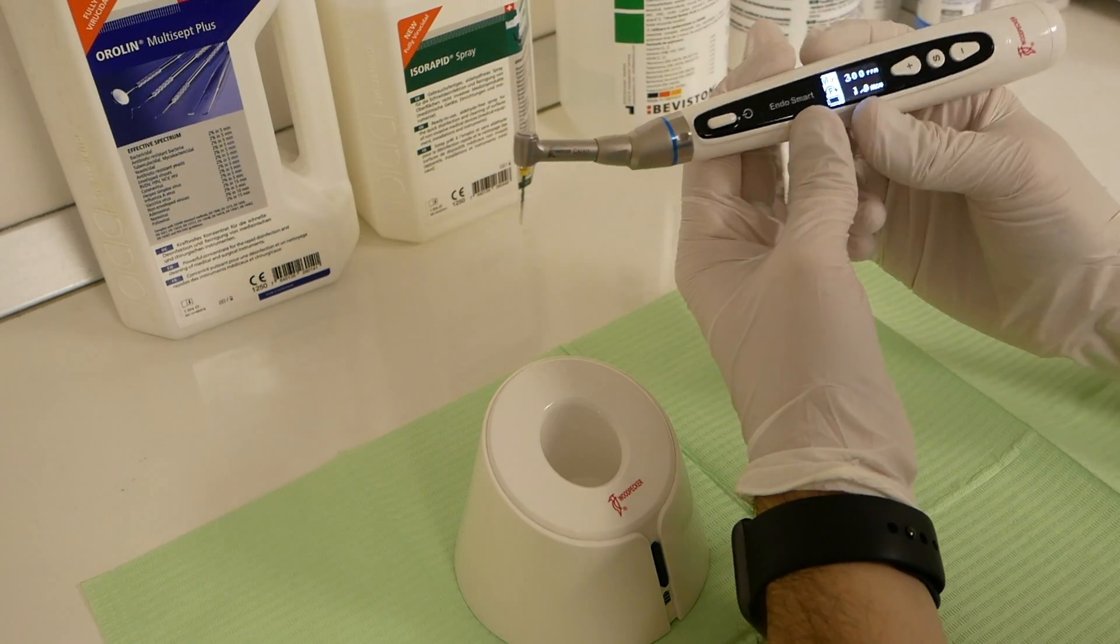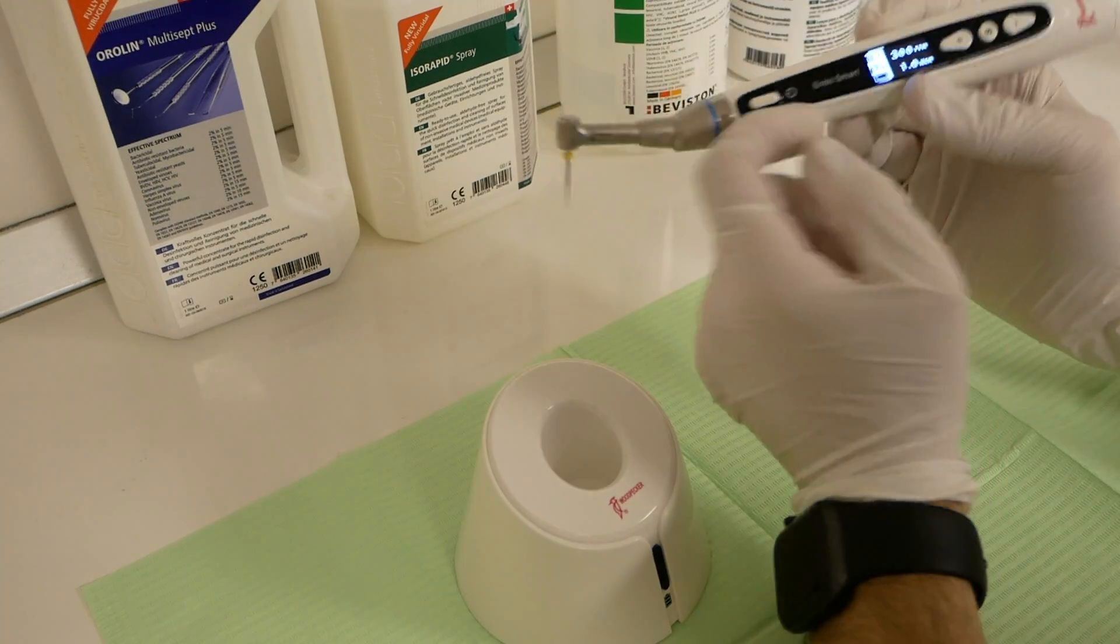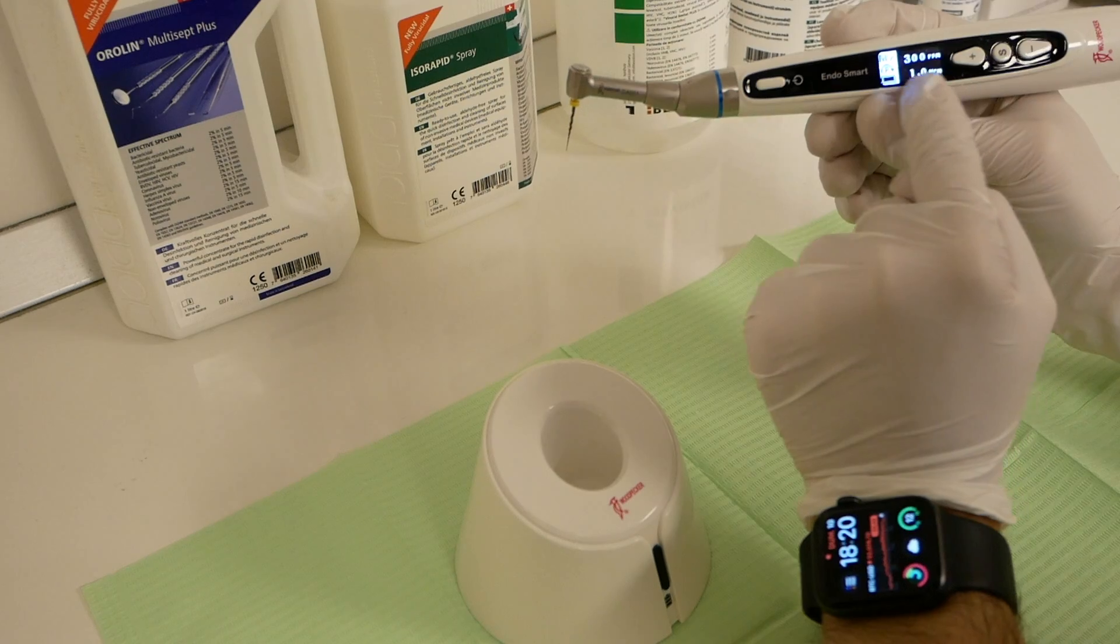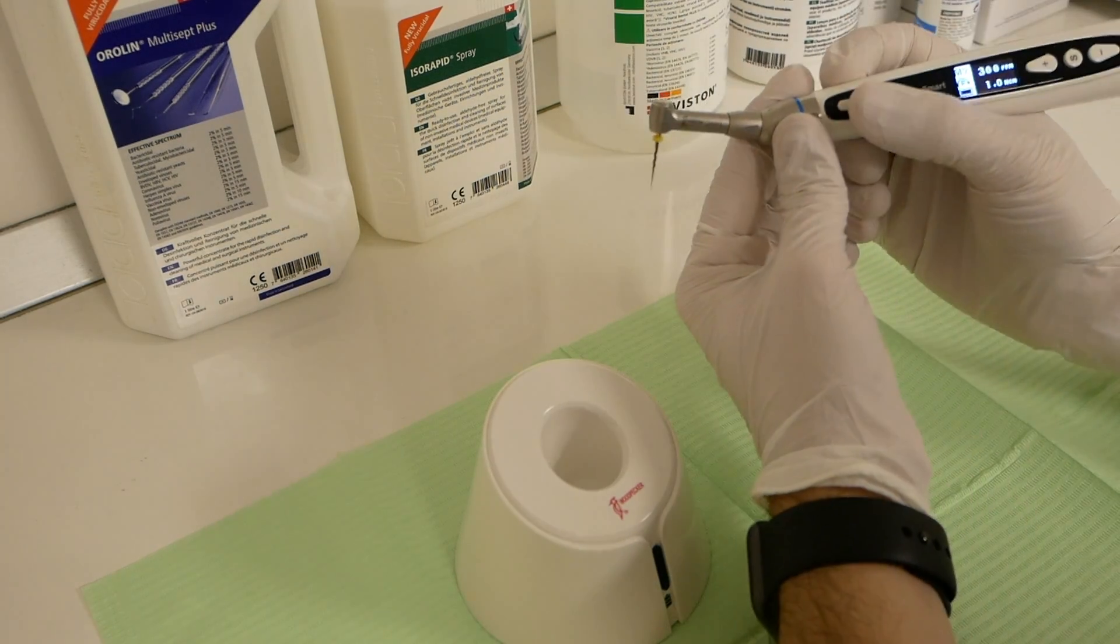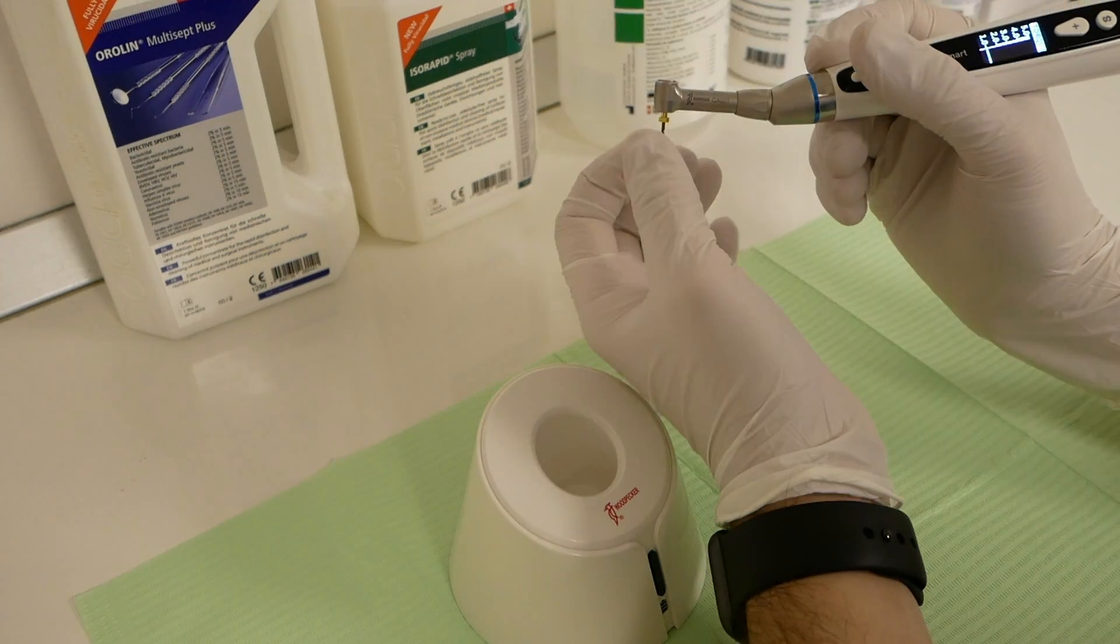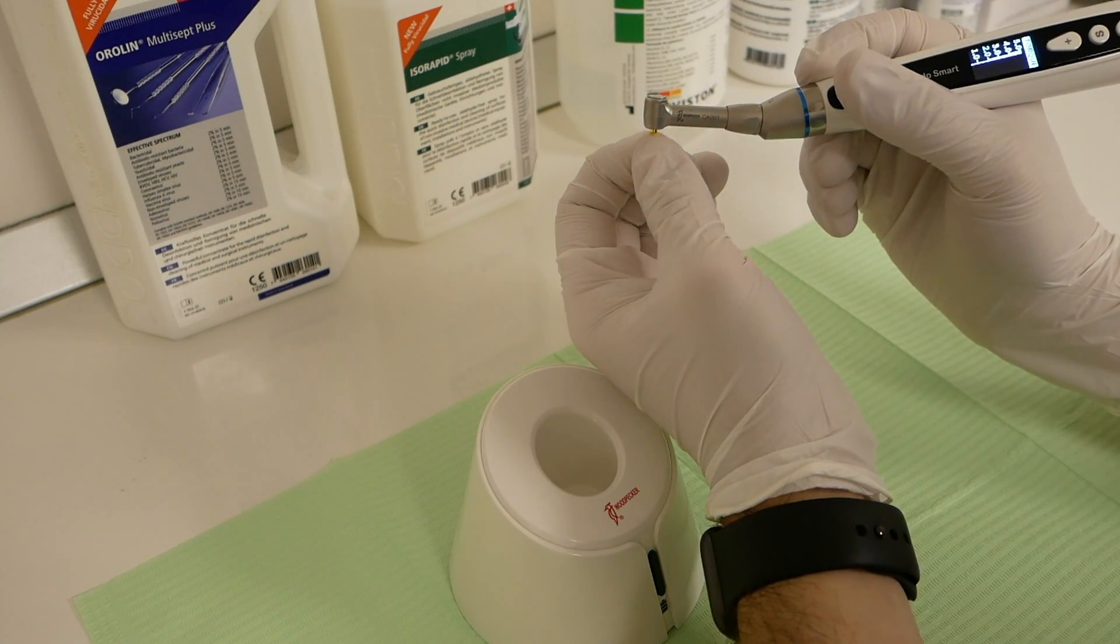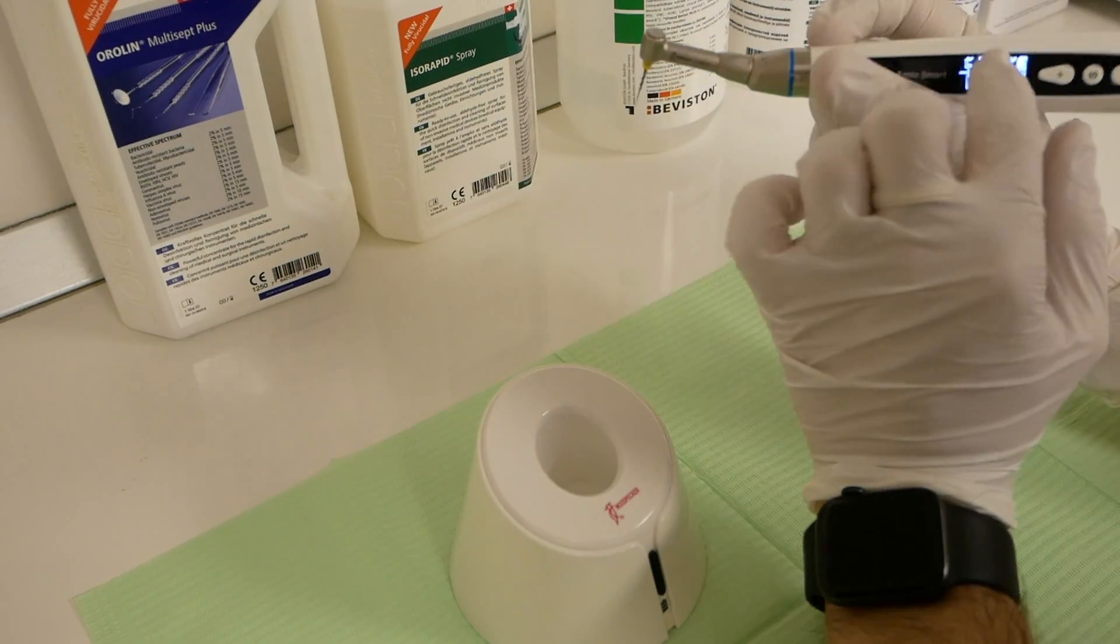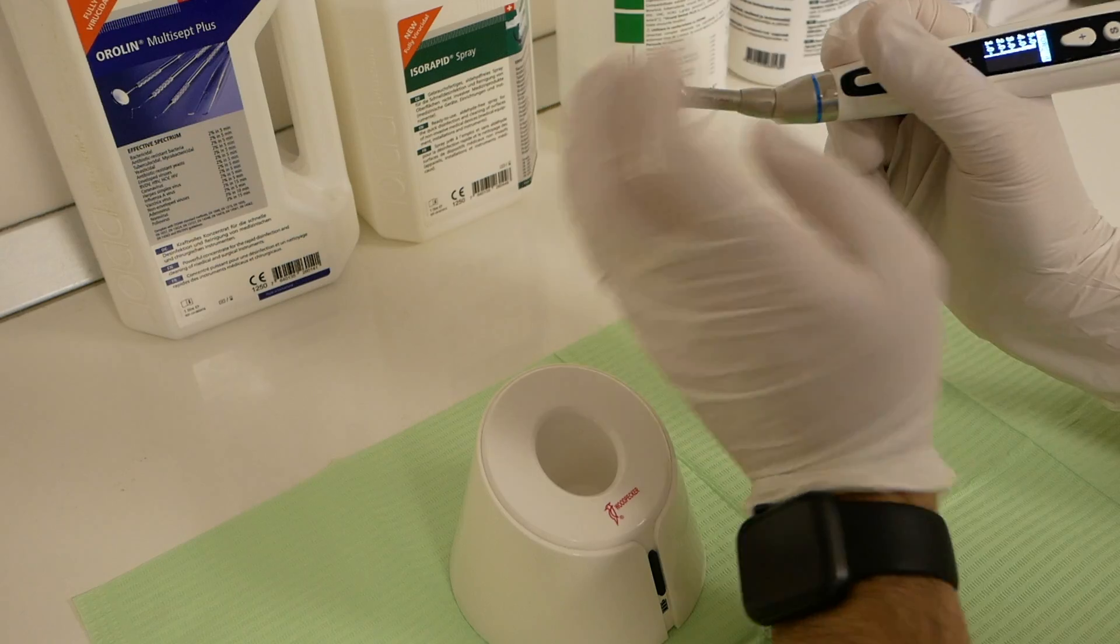That's it. This is program 9: forward motion, 300 RPM, 1 N centimeter of torque. So let's try it. It reached 1 N centimeter of torque. It auto-reversed.